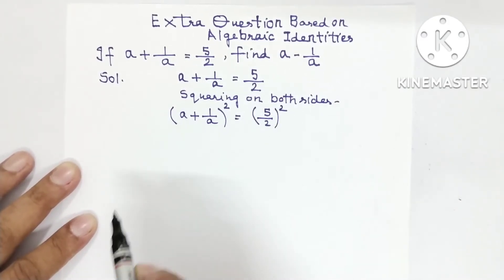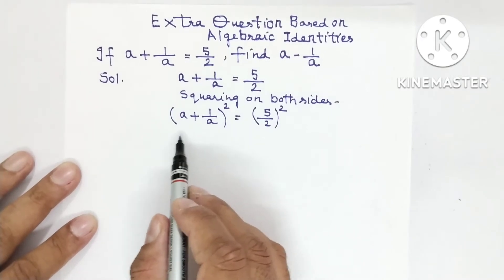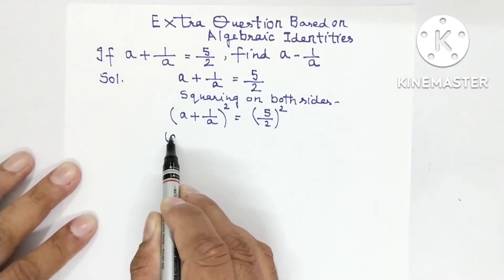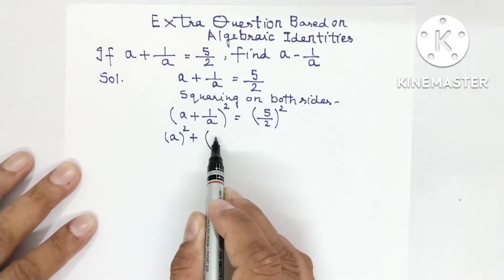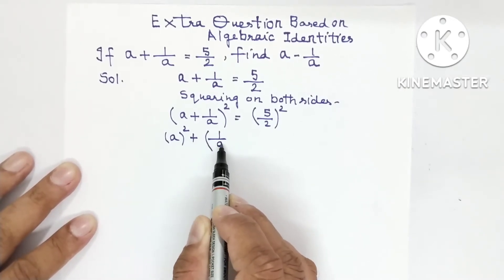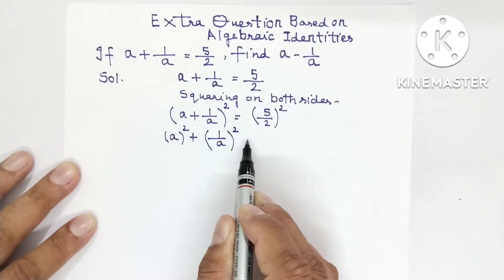So which identity will be applied? (a + b)². So it is a² + b². b is 1/a, so it's (1/a)².